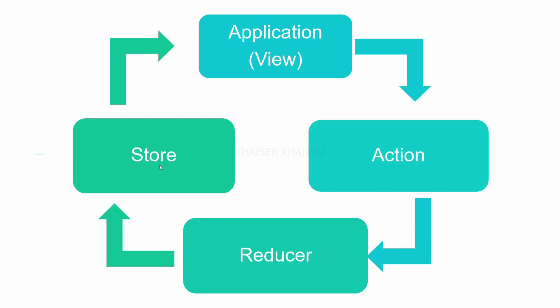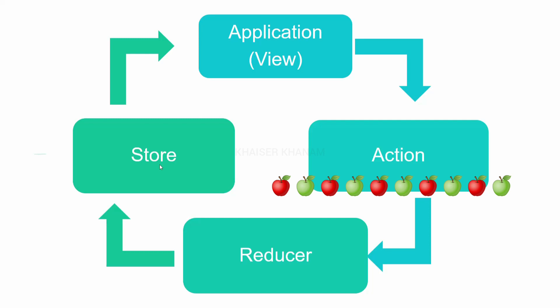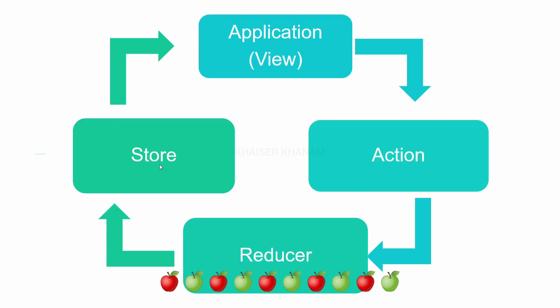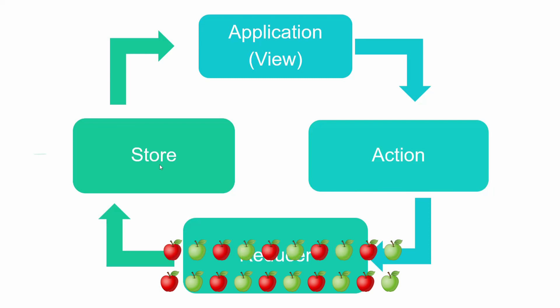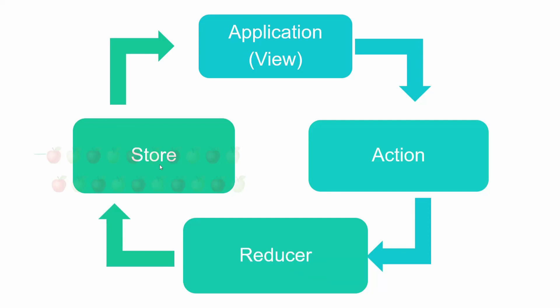For example, suppose I have a fruits website and I have 10 apples stored. That data is sent to action, which passes it to reducer. Now if I add 10 more apples, that data is again sent to action. Action will tell reducer what to do — either create a new list and add the 10 apples, or add them to the previous data. Accordingly, reducer will accept the action and either create a new list or merge the data, then send it to the store.